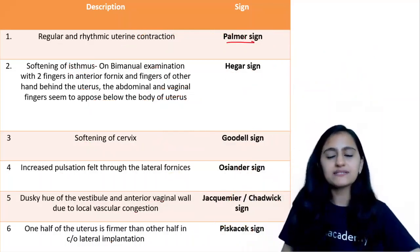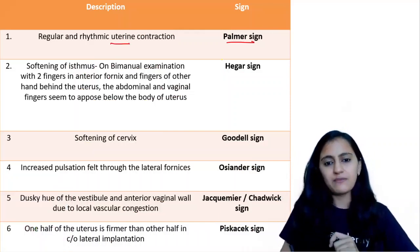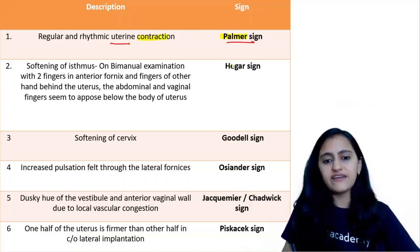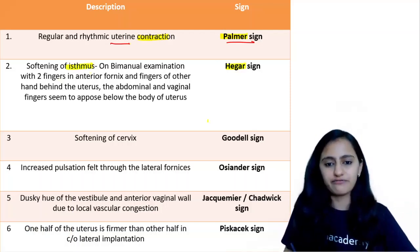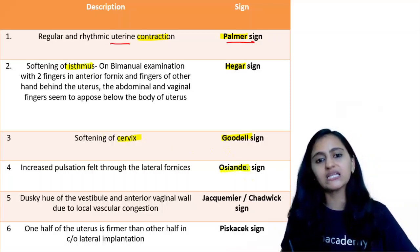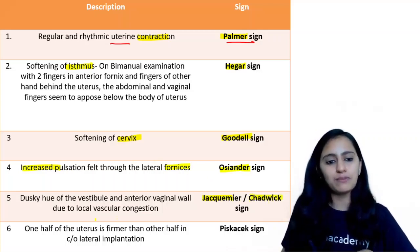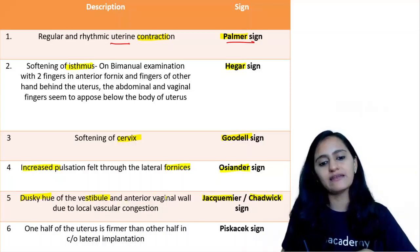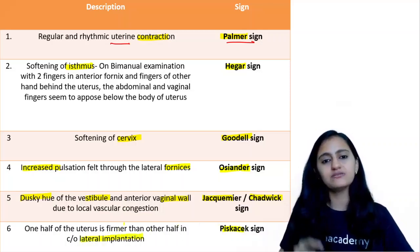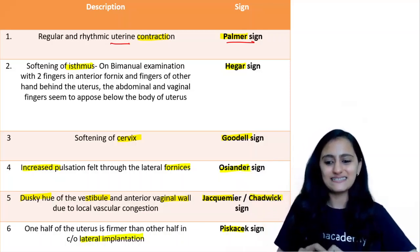Let's quickly revise all the mnemonics. Palmer sign — palm contracts = uterine contraction. Hegar sign — 'Hi' = isthmus softening. Goodell sign — C and G go together, cervix becomes goody goody = cervix softening. Ockander sign — dhar dhar = increased pulsations through lateral fornices. Jacquemier or Chadwick sign — Jackie Chan blue = dusky hue of vestibule and vaginal wall due to congestion. Piskacek sign — pichak jana = lateral implantation, one side soft, one side firm.